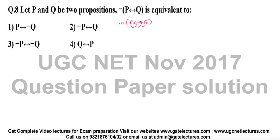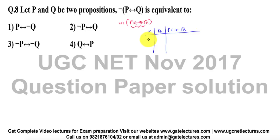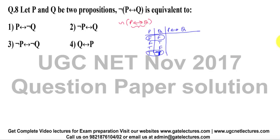My intention is to explain what this double implication is. We have P and Q. When we say P double implies Q, the values are: true-true, false-false, false-true, and true. This double implication is true only when both values are the same — either both true or both false. So in those two cases it will be true, otherwise it will be false.